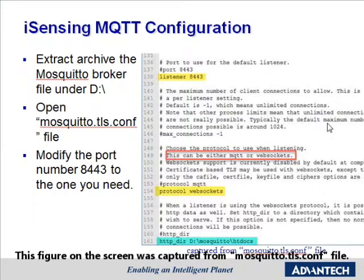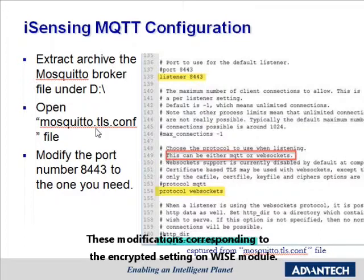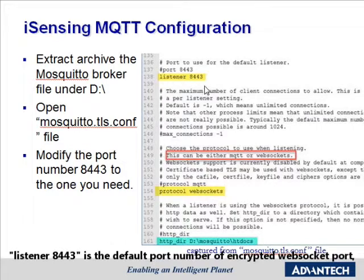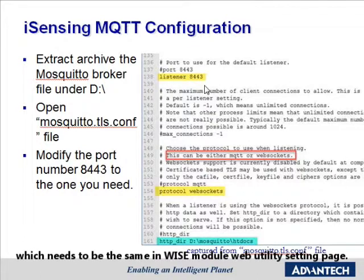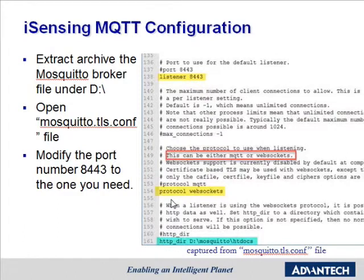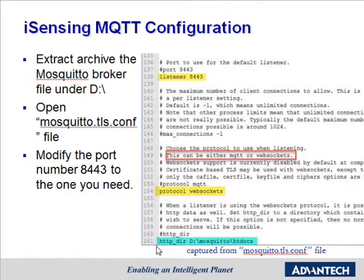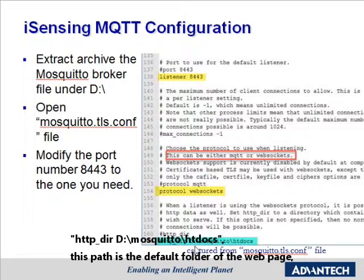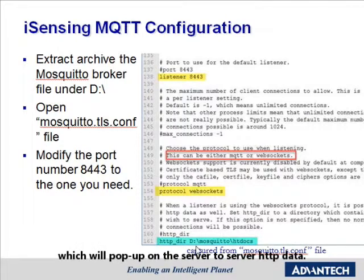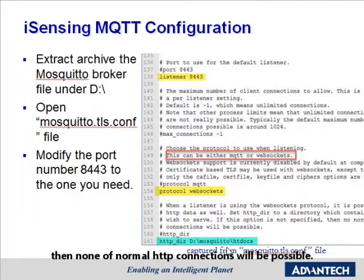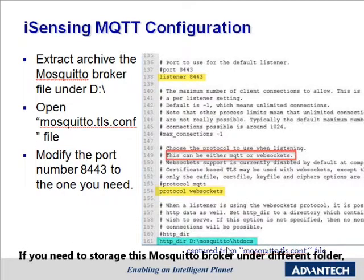This figure on screen was captured from the mosquitto.trs.config file. These modifications correspond to the encrypted settings on the WISE module. Listener 8443 is the default port number for the encrypted WebSocket port, which must match the WISE module WebUtility setting page. Protocol WebSocket indicates the communication protocol WISE uses for iSensing and MQTT cloud function. The HTTP direction path is the default folder for the web page that will serve HTTP data on the server. If this option is not specified, normal HTTP connections will not be possible. If you need to store the Mosquitto broker in a different folder, please modify this parameter.